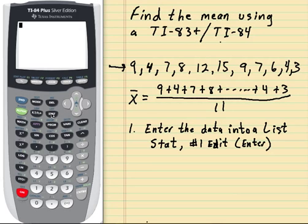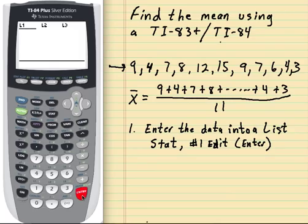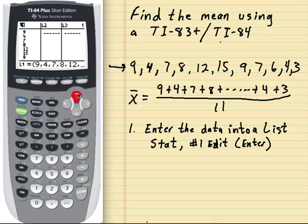So let's do that stat, and the enter is the number 1, so you just want to hit enter on number 1, and there goes your list. And as you can see, I already have this data in my list, but I'm going to show you. If you have data in your list that you don't want, you highlight on the L1, you hit the clear button, and you hit the down. That'll clear out your list.